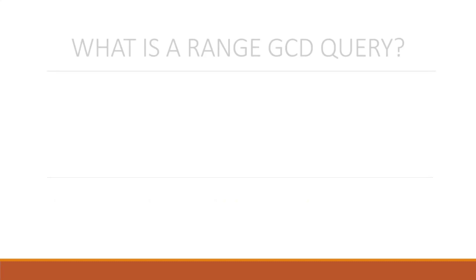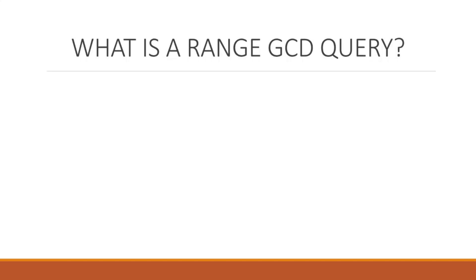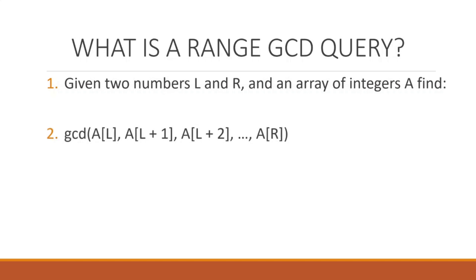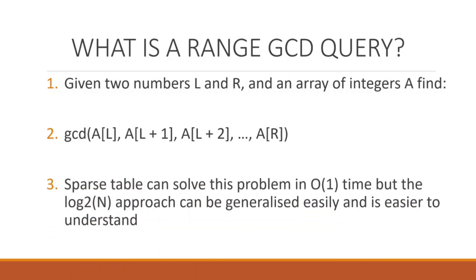So first, let's understand what is a range GCD query. A range GCD query is: given two numbers l and r and an array of integers a, we need to find the GCD of the range from l to r — so basically GCD(a[l], a[l+1], ..., a[r]). Sparse table can help us solve this in O(1) time, however I will be discussing an O(log n) approach which is easier to understand.